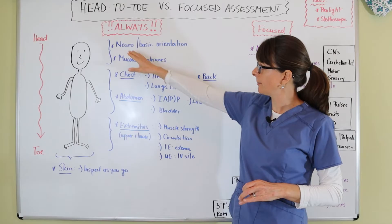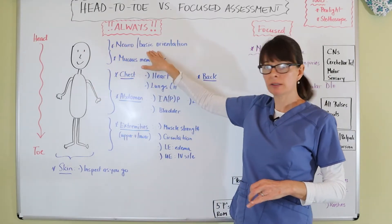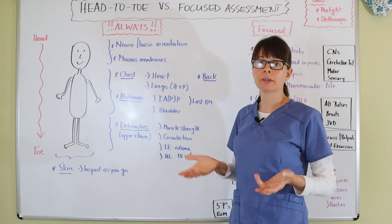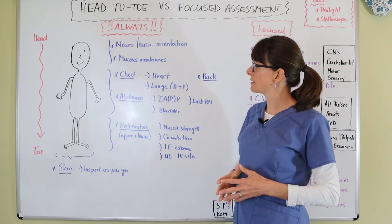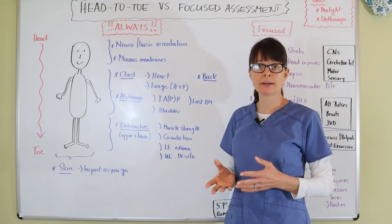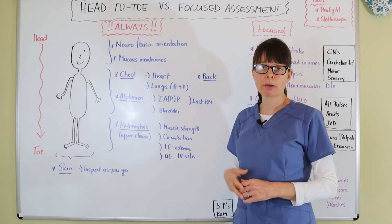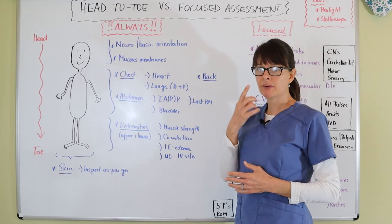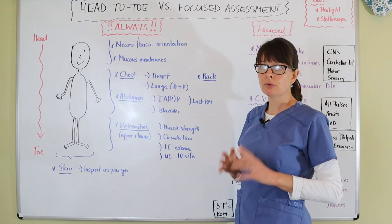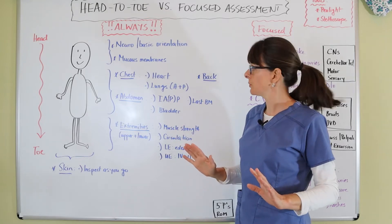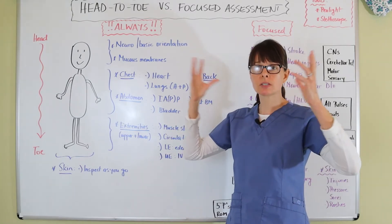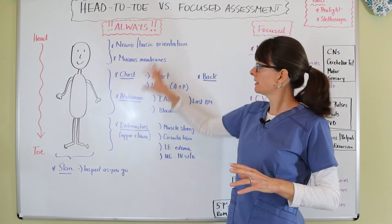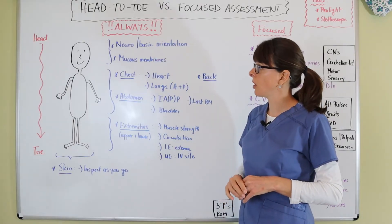When it comes to the head assessment, we talk to them, ask them the basic orientation questions to assess their basic neurostatus and see how they're overall doing. We always need to assess their mucous membranes to determine their hydration status, and also the color of the mucous membranes may be pointing us in the direction of anemia or other abnormalities. For the head, that's the minimum — those two things. Of course, if there are any obvious injuries or stitches or surgeries, then that applies more to the focused assessment.